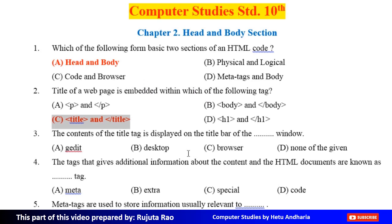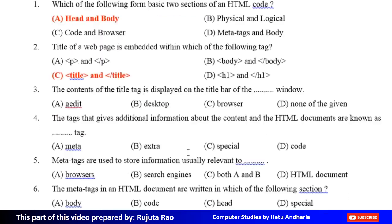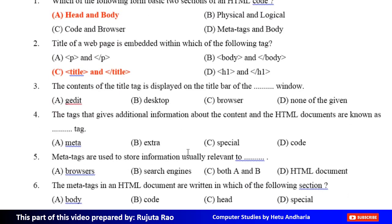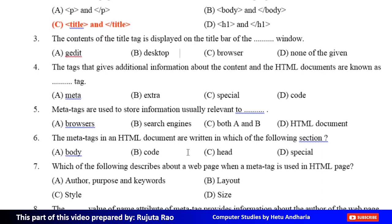Third MCQ: The contents of the title tag is displayed on the title bar of the dash window. Option A: Gadget, Option B: Desktop, Option C: Browser, Option D: None of the given. The correct answer is Option C, Browser.